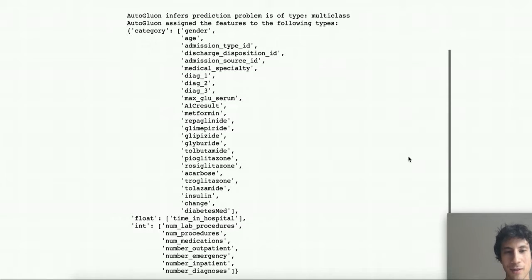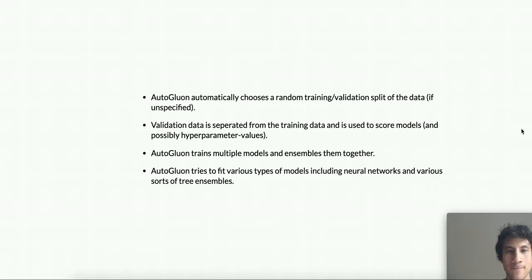The time in hospital variable is a floating point feature in this case - that's actually the target value. And then, or it's not the target value here because we're predicting readmission, remember. So here in this case, this is actually being used as a predictive feature. And then the integer columns include like the number of lab procedures the patient received during their stay in the hospital and the number of medications they were given, the number of diagnoses they got, as well as the number of previous outpatient visits they had. And so internally in fit, AutoGluon automatically chooses a random training validation split of the data if you don't specify anything. The validation data will be separated from the training data and used to score each model and possibly some hyperparameter settings in the model. Then AutoGluon trains a bunch of models in sequence, and finally it ensembles their predictions all together trying to see if the ensemble can actually outperform any of the individual models.